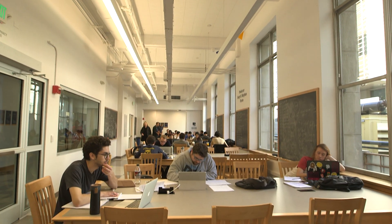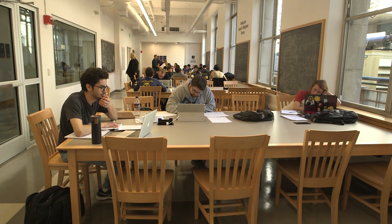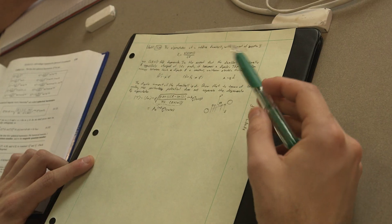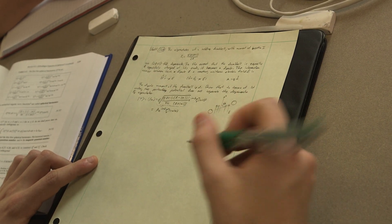UC Berkeley is a very large institution, and even the physics department here is very large, so it can be tough for undergraduates to find a community where they fit in.